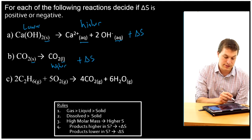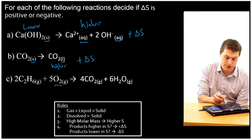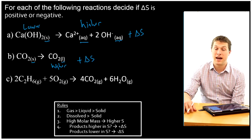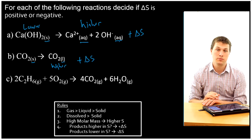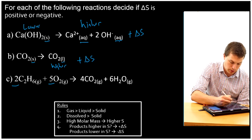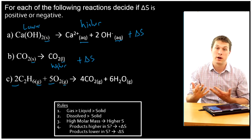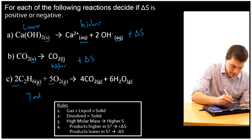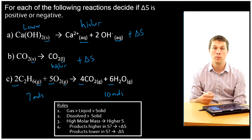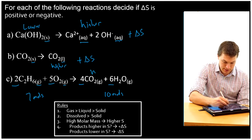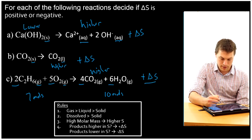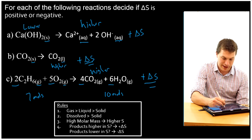Last reaction: C2H6 reacts with oxygen to give CO2 and water — that's a combustion reaction, and they're all gaseous. The most important question is which side has more moles of gas. The reactant side has 2 plus 5 moles, so 7 moles of gas. The product side has 4 plus 6, so 10 moles. The products have more moles of gas, meaning the products are higher in entropy — positive delta S. So each one of these reactions was a positive delta S.